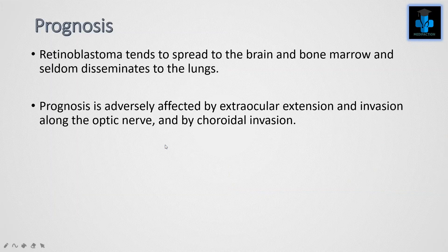Prognosis: Retinoblastoma tends to spread to the brain and bone marrow, and seldom disseminates to the lungs. Prognosis is adversely affected by extraocular extension and invasion along the optic nerve, bone marrow, and by choroidal invasion.